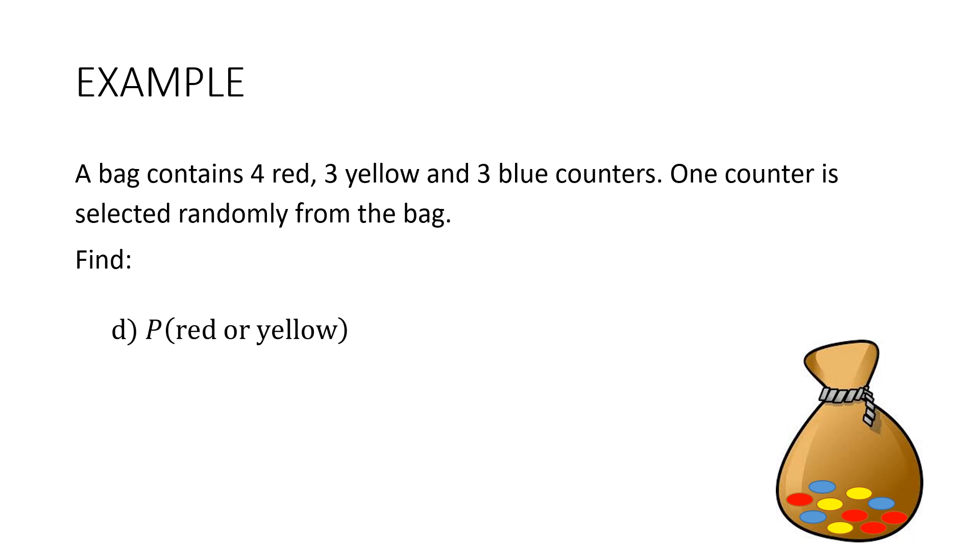A couple more. What's the probability that it's either red or yellow? So there's four reds and three yellows. Total seven. So it's going to be seven out of ten.